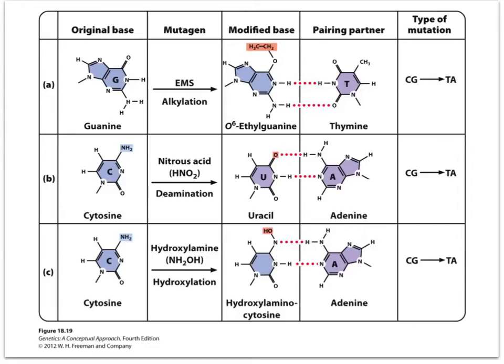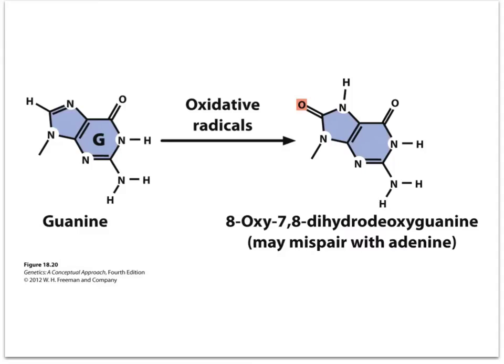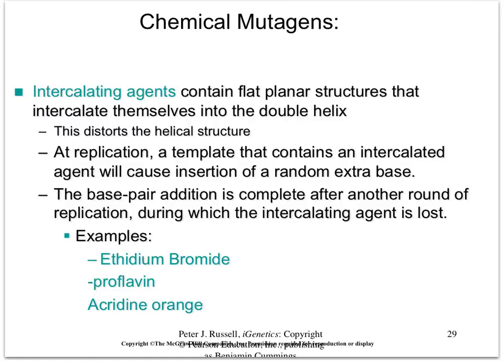I'm not going to ask you to write out any of these structures or tell me which ones base pair, but I want you to understand that if I gave you an example like this — CTGA — you could tell me this would be a transition mutation. You can understand how, if there's a deamination and it now looks like uracil, how these things can happen. Oxidative radicals change guanine into something that then pairs with adenine.